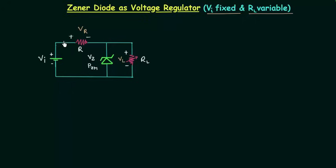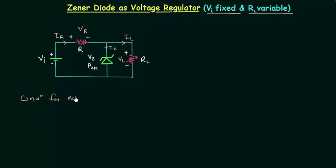Let's say current in the series branch is IR, current through the load is IL, and current through the Zener is IZ. IZ is the Zener current and we have to find out the condition for minimum load resistance RL.